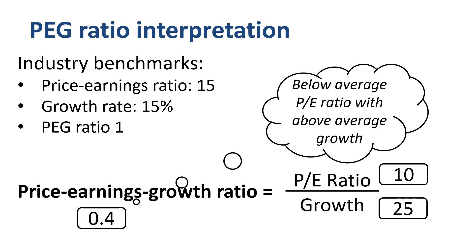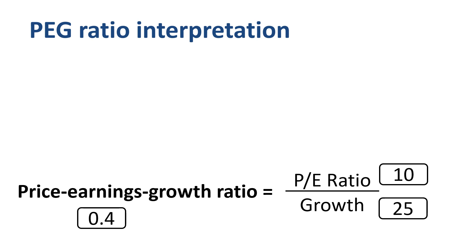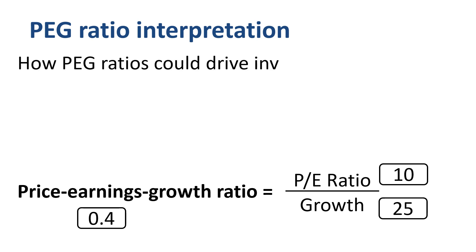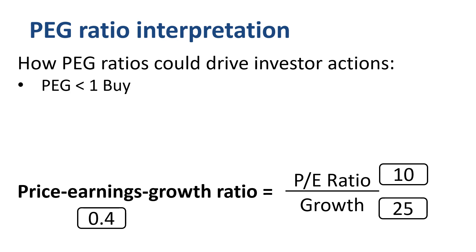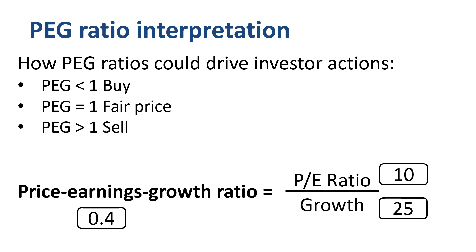The PEG ratio is a rule of thumb used for the screening of potential buy or sell candidates, particularly among large numbers of lesser-known stocks. PEG ratios could drive action from investors. Historically, some investors used the rule of thumb to buy shares if the PEG ratio for a company was below 1, hold shares if the PEG ratio was at 1, and sell shares if the PEG ratio was significantly above 1.